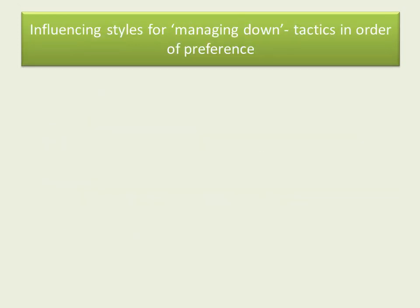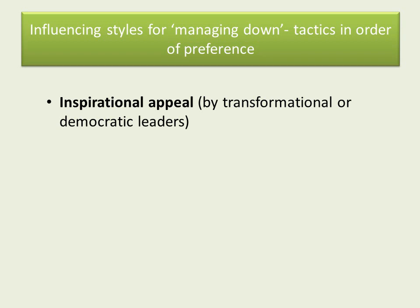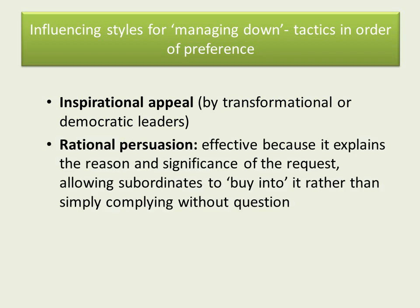Managing downwards offers a few more options: from straightforward appeal — because you're a transformational or democratic leader trying not to simply tell them initially — you might try rational persuasion and getting buy-in, but at the end you can use pressure, which is the preference of autocratic leaders. So three straightforward tactics or styles there.